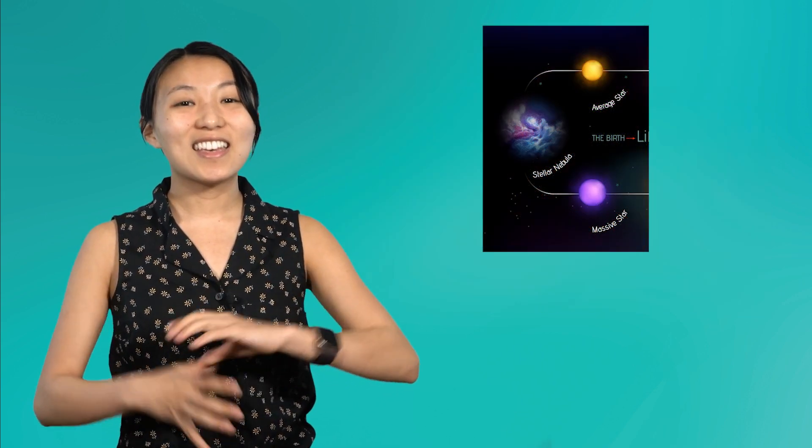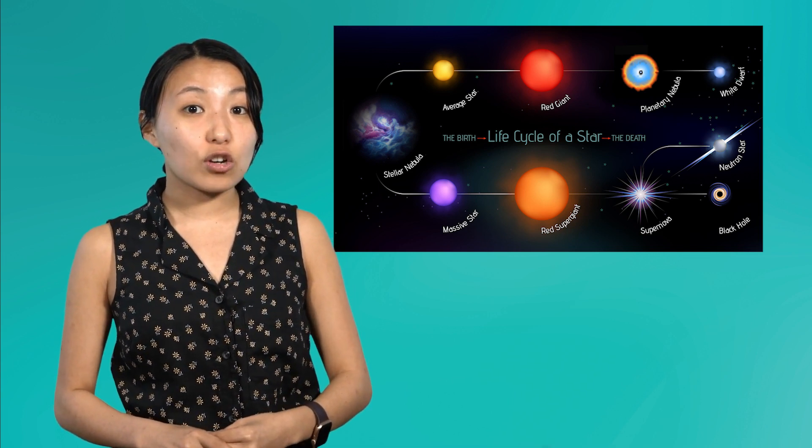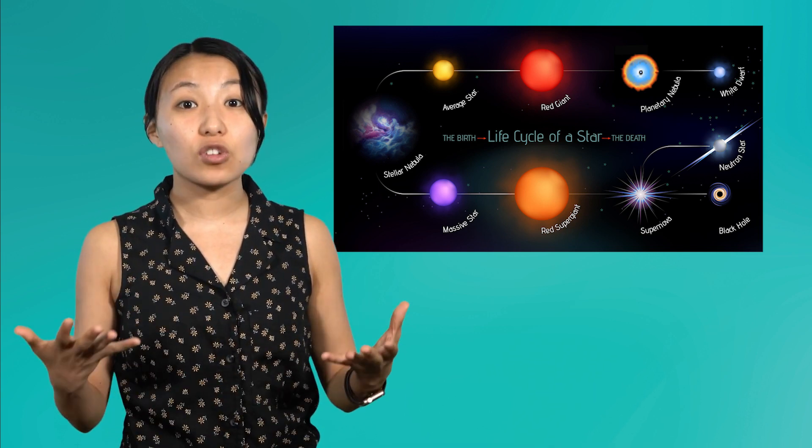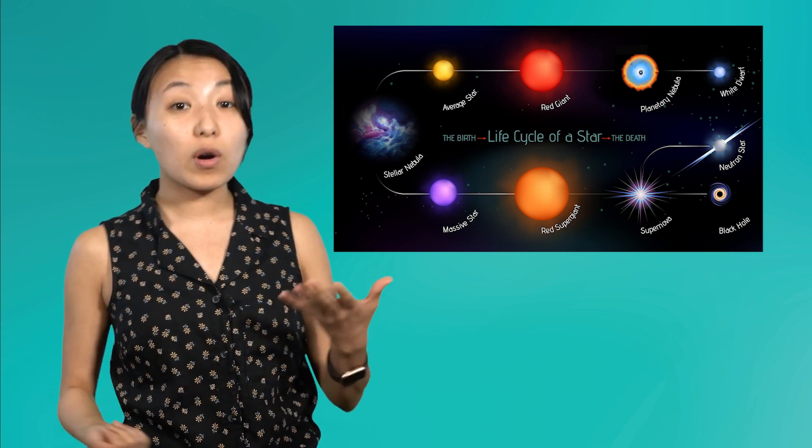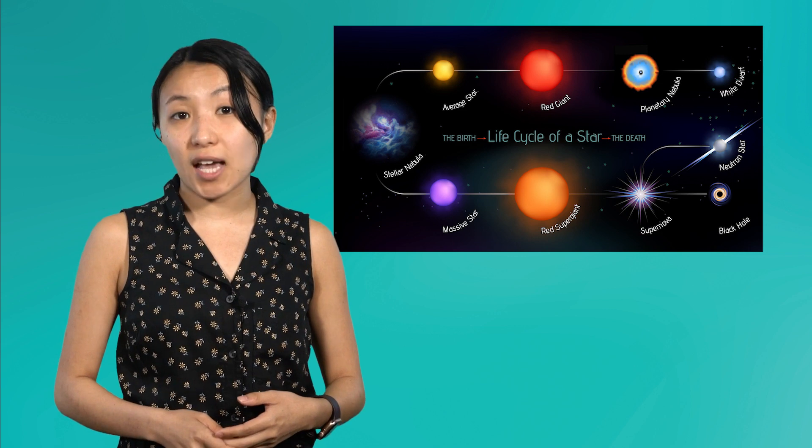Once a star is considered to be a main sequence star the events of its life are determined by one thing: its size. Astronomers have determined that the stages stars go through depend on whether the star is an average-sized star or a massive star. Our Sun for example is an average-sized star.